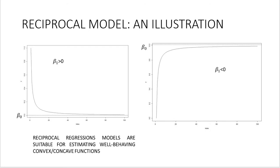So on this slide you can see illustrations for reciprocal models with positive beta 1 and negative beta 1. The characteristic feature of these types of models is that as x approaches infinity, like when the value of independent variable increases, then y will approach some asymptotic value but never actually take this value.